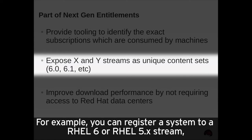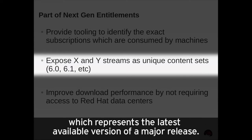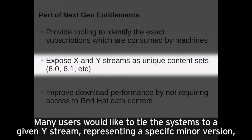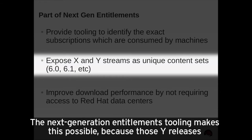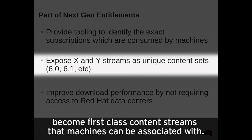For example, you can register a system to a RHEL 6 or RHEL 5 X stream, which represents the latest available version of a major release. Many users would like to tie the systems to a given Y stream representing a specific minor version, for example a 6.1 machine or a 5.8 machine. The Next Generation Entitlement tooling makes this possible because those Y releases become first-class content streams that machines can be associated with.